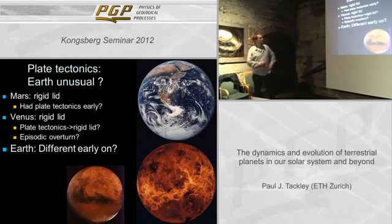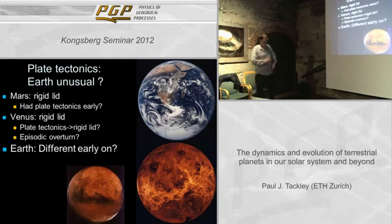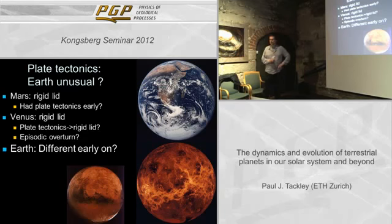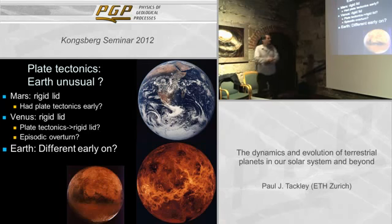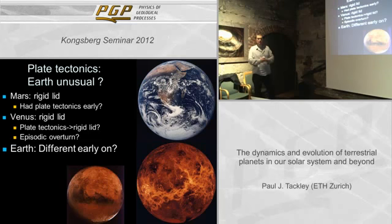Focusing on plate tectonics: Earth is unusual. Mars has a rigid or stagnant lid — these terms are used interchangeably. There's been some suggestion that Mars may have had plate tectonics early on, but it's very uncertain. Venus is the same — there have been various suggestions that perhaps it used to have plate tectonics and it shut off, or that it undergoes a sort of episodic burst of plate tectonics.